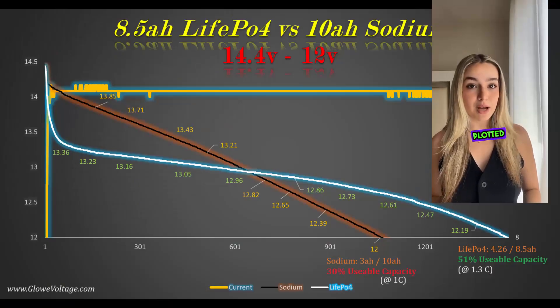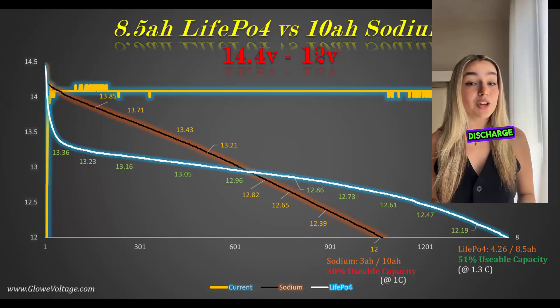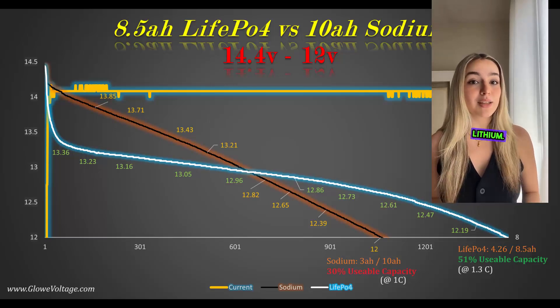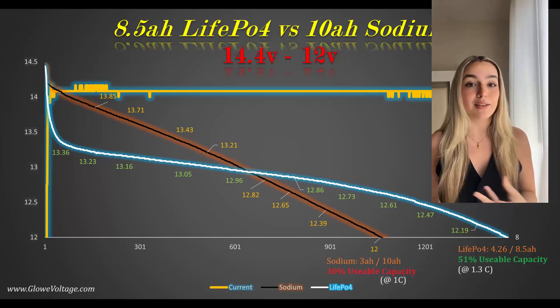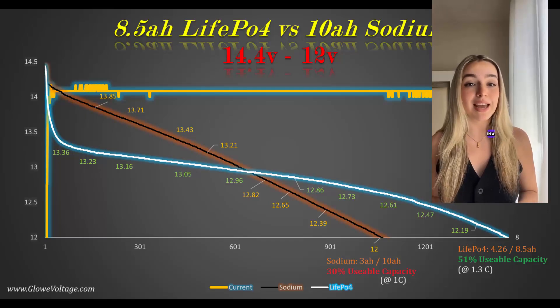This is what the collected data looks like plotted out. The sodium starts out strong, but the linear nature of the discharge causes it to quickly drop below the lithium. This trend doesn't slow down either. The result is unfortunately much smaller than anticipated usable energy in a case like this.